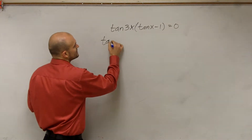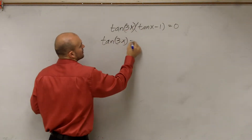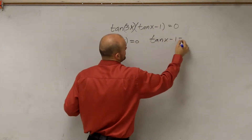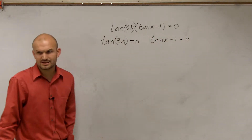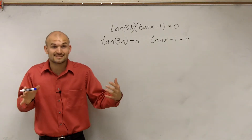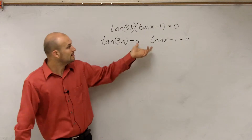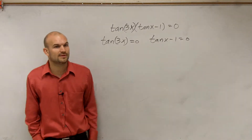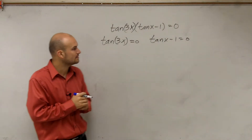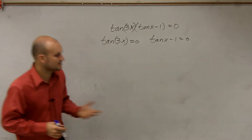So it's exactly where we want it. We can just write tangent of 3x equals 0, and tangent of x minus 1 equals 0. You guys see how it's already set up? If it's not set up, then you'd want to factor it first, and then solve. But here we're already good — it's already set up, so we can just split it apart. Now we just need to solve each one.